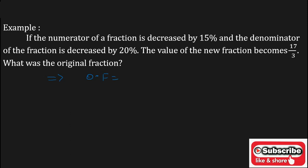The original fraction is equal to x upon y, where x is the numerator and y is the denominator. The numerator is decreased by 15 percent, that is x minus 15 percent of x, and the denominator is decreased by 20 percent, that is y minus 20 percent of y.